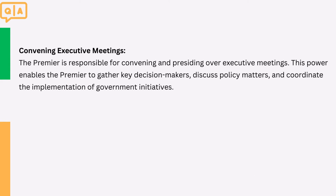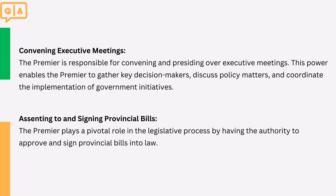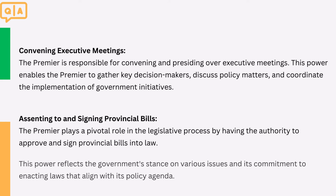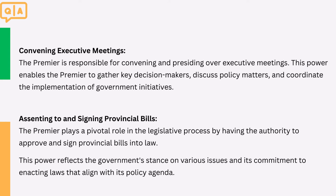2. Convening executive meetings. The premier is responsible for convening and presiding over executive meetings. This power enables the premier to gather key decision makers, discuss policy matters, and coordinate the implementation of government initiatives. 3. Assenting to and signing provincial bills. The premier plays a pivotal role in the legislative process by having the authority to approve and sign provincial bills into law. This power reflects the government's stance on various issues and its commitment to enacting laws that align with its policy agenda.